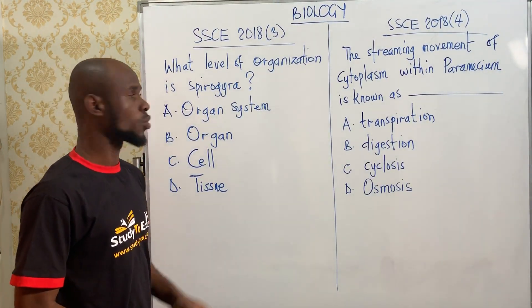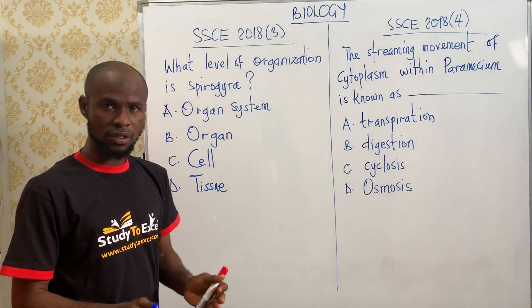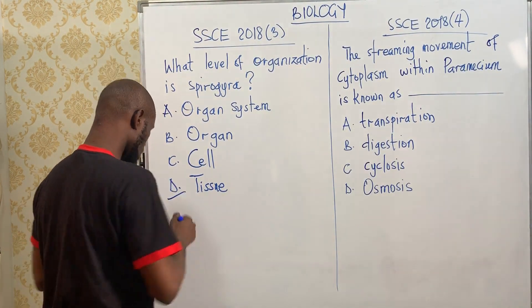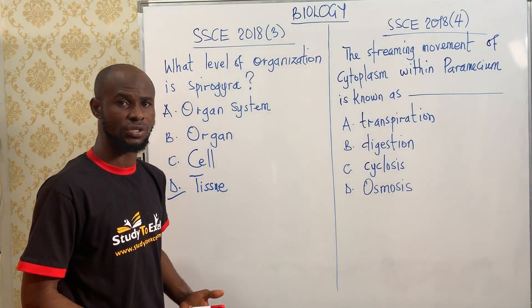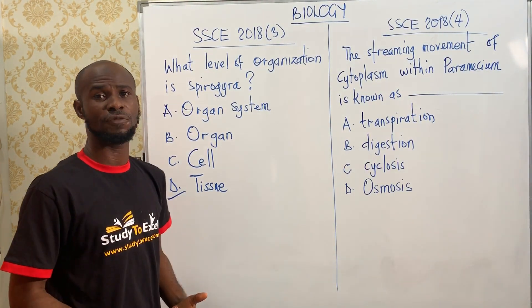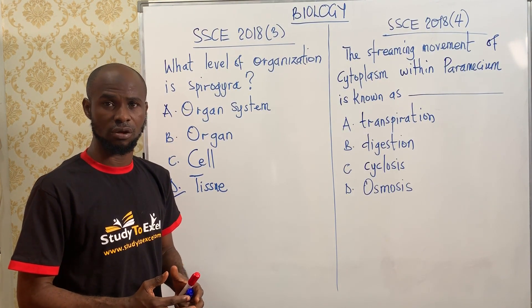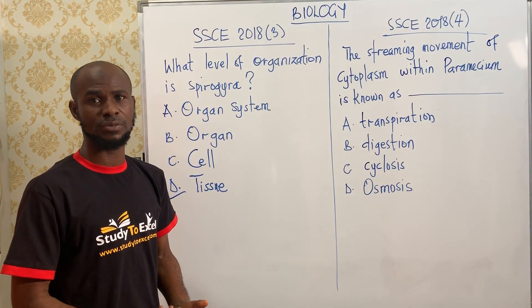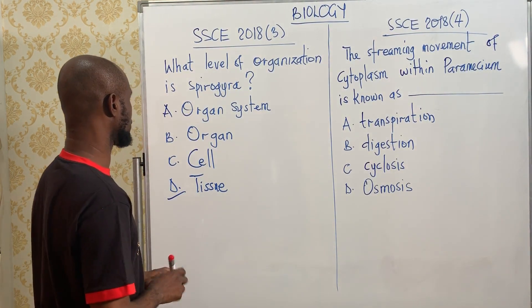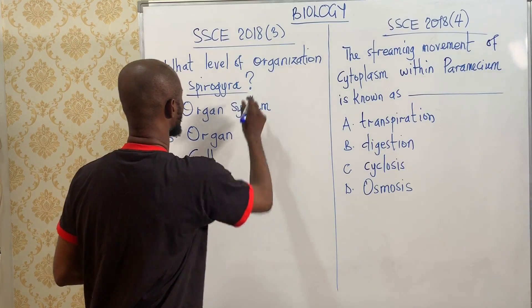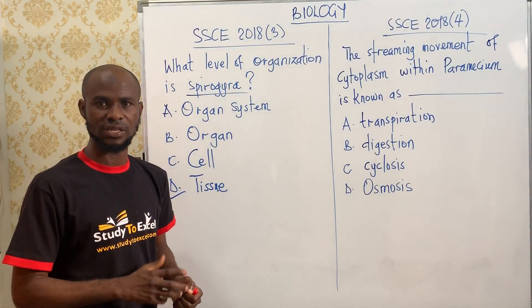Let's move to the next question, number three: which level of organization is spirogyra? The answer is tissue. Spirogyra belongs to the tissue level because tissue is defined as the combination of related cells performing a similar function. Spirogyra belongs to the filamentous organisms — it is a filament.